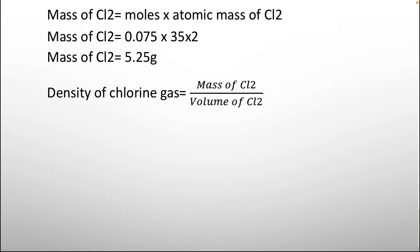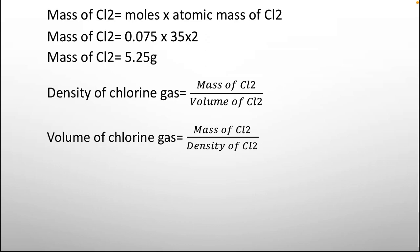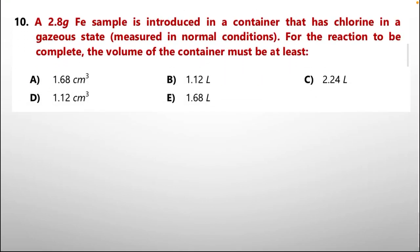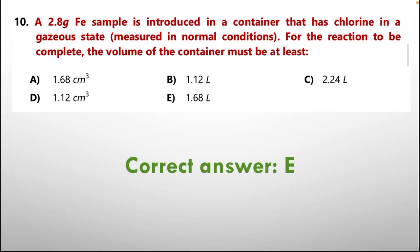To find the volume of chlorine, use the density formula: density = mass ÷ volume, rearranged to volume = mass ÷ density. The density of chlorine gas is 3.214 g/L. So volume = 5.25 ÷ 3.214 ≈ 1.63 liters. This is closest to option E: 1.68 liters. So the correct answer is option E.